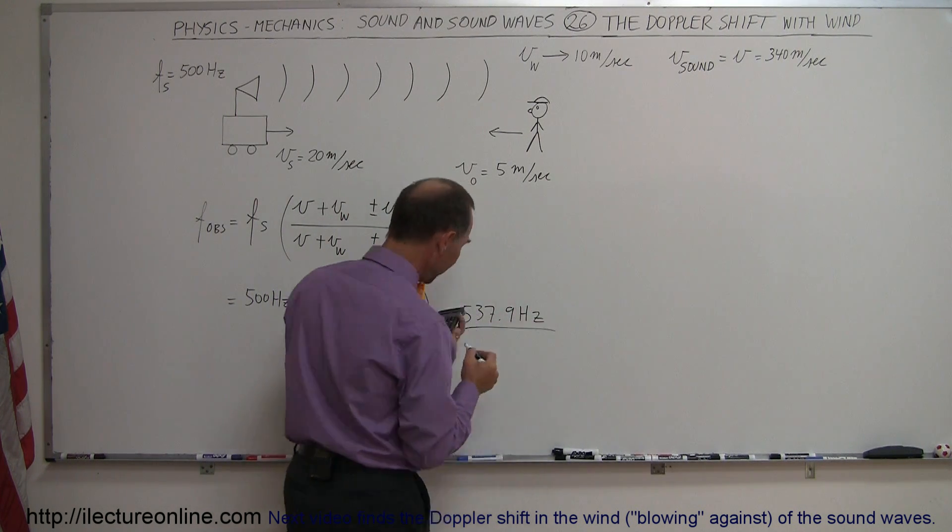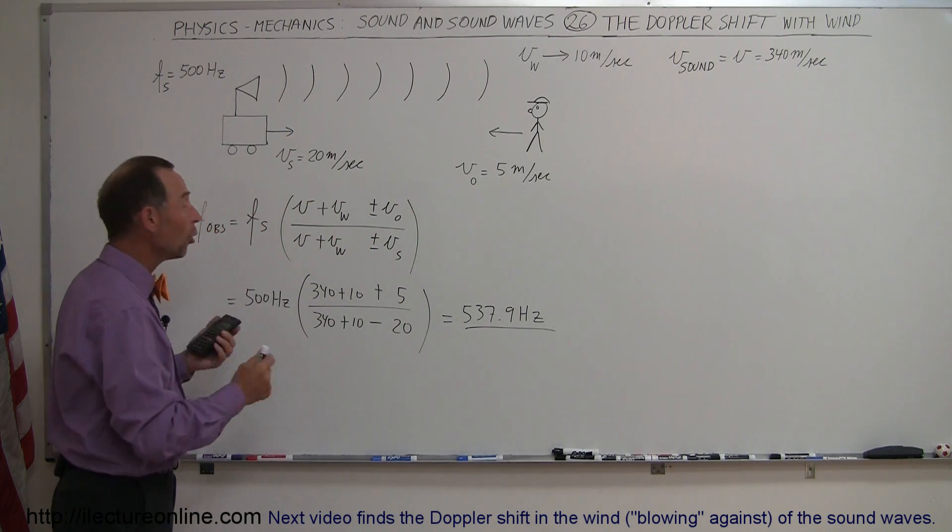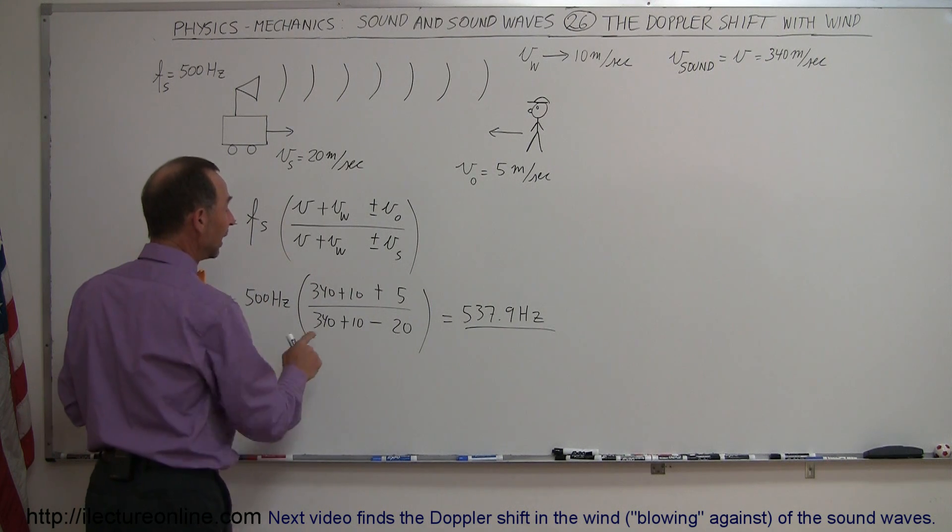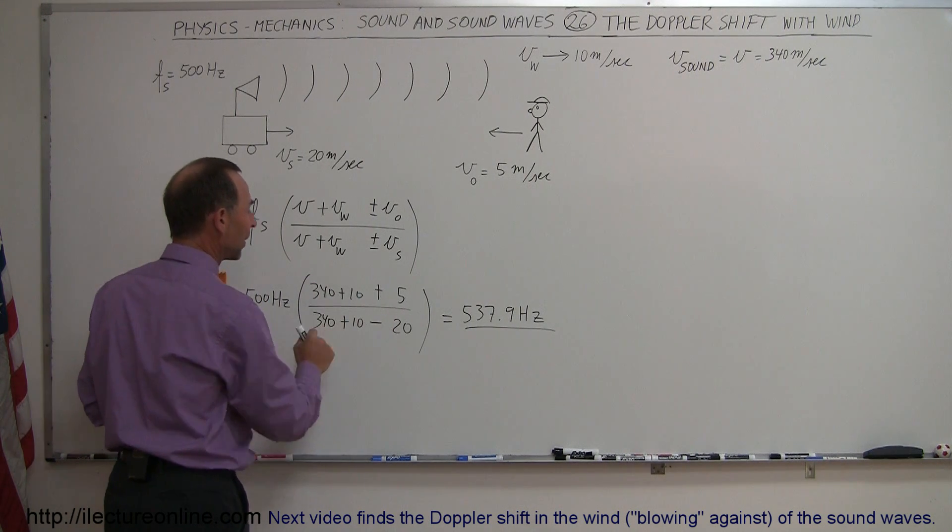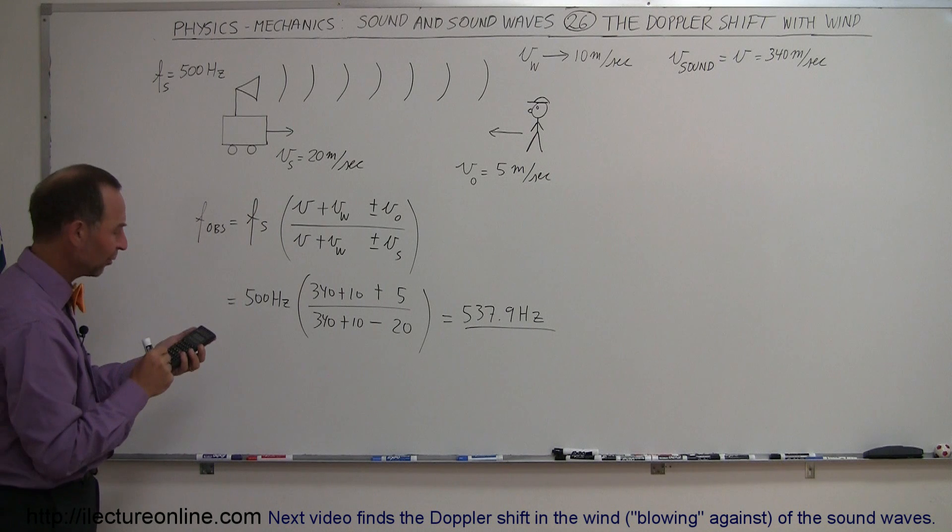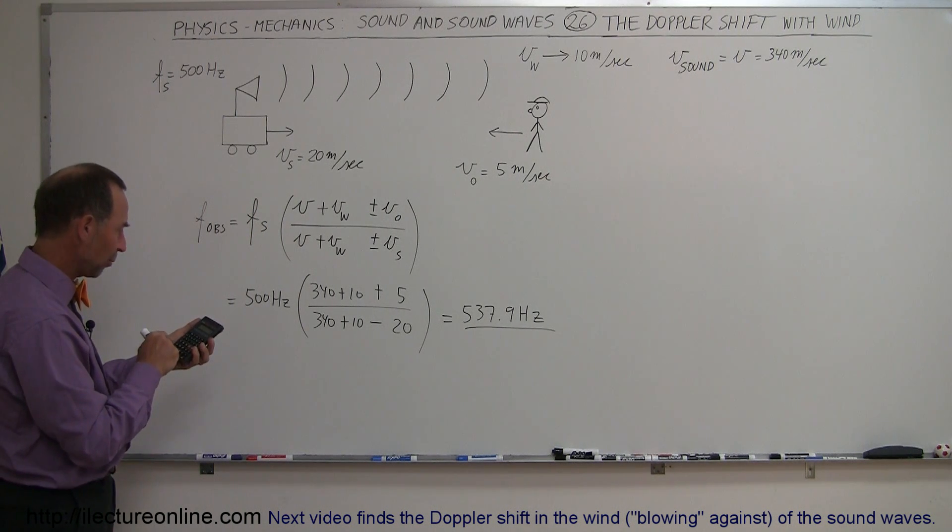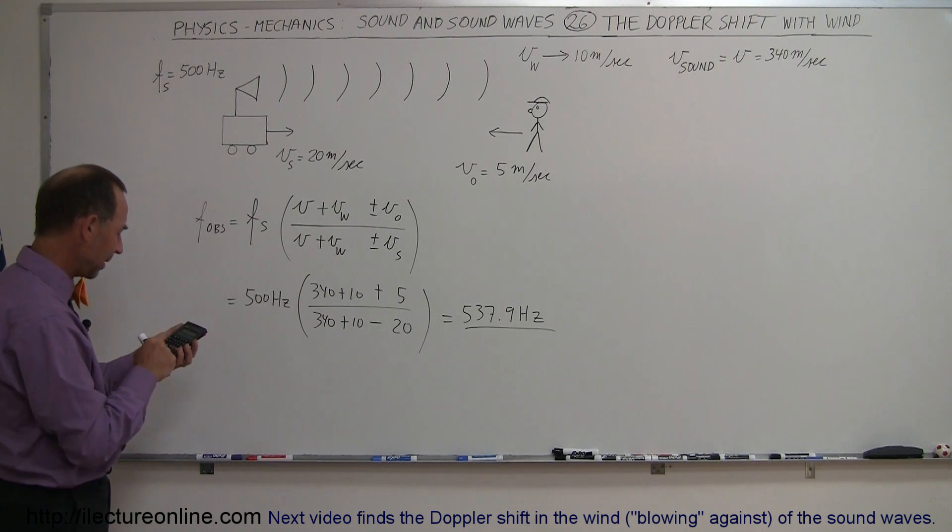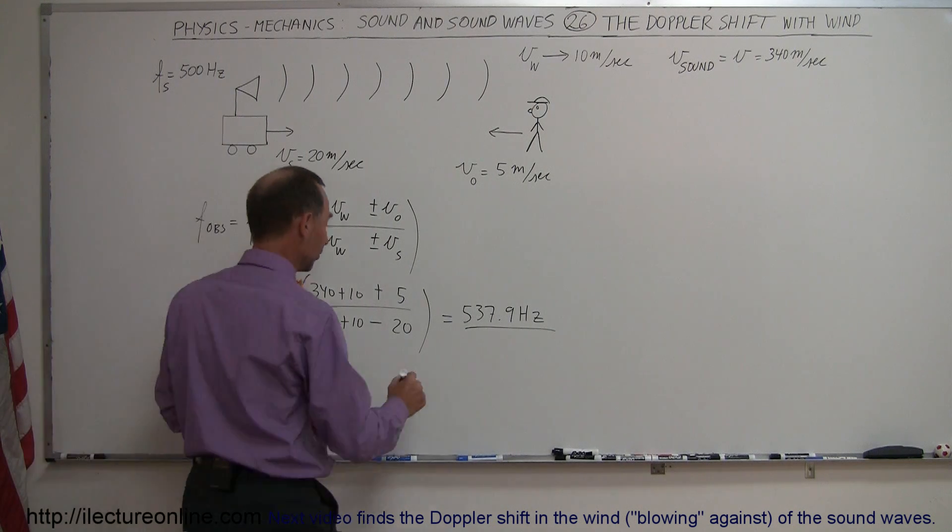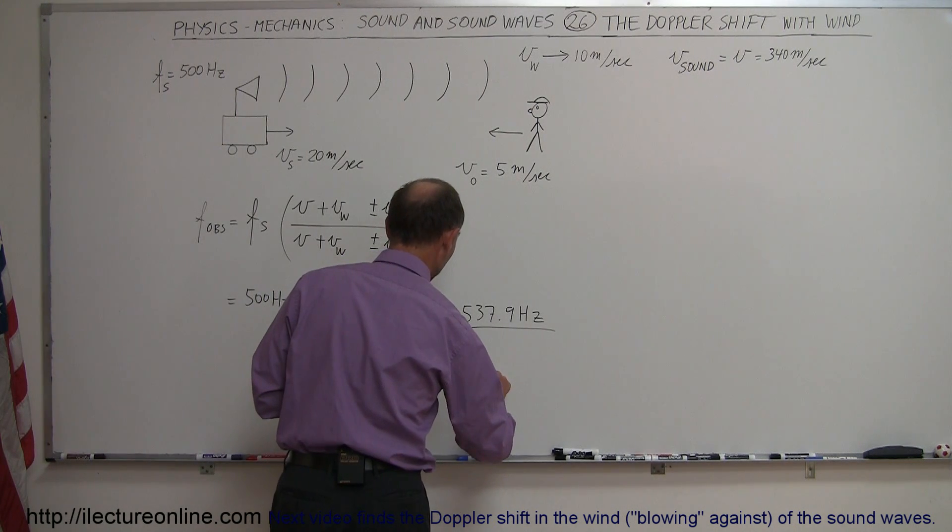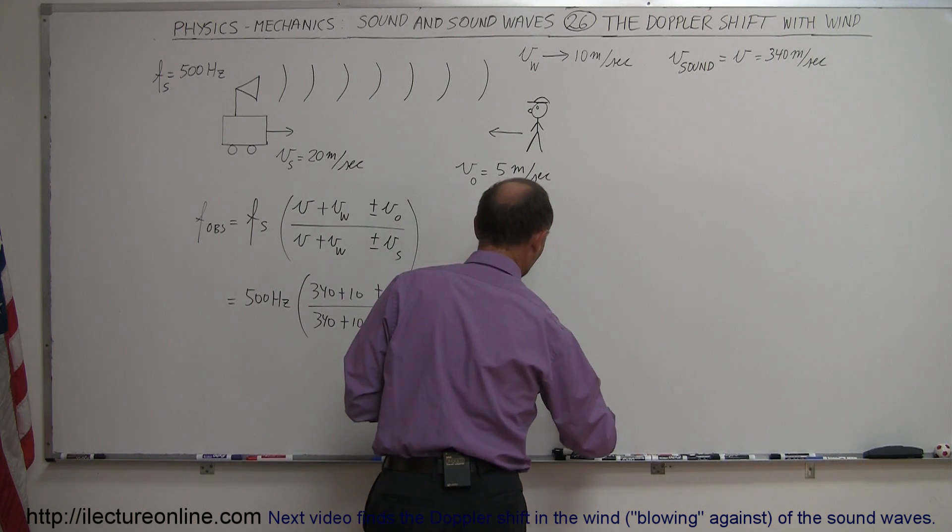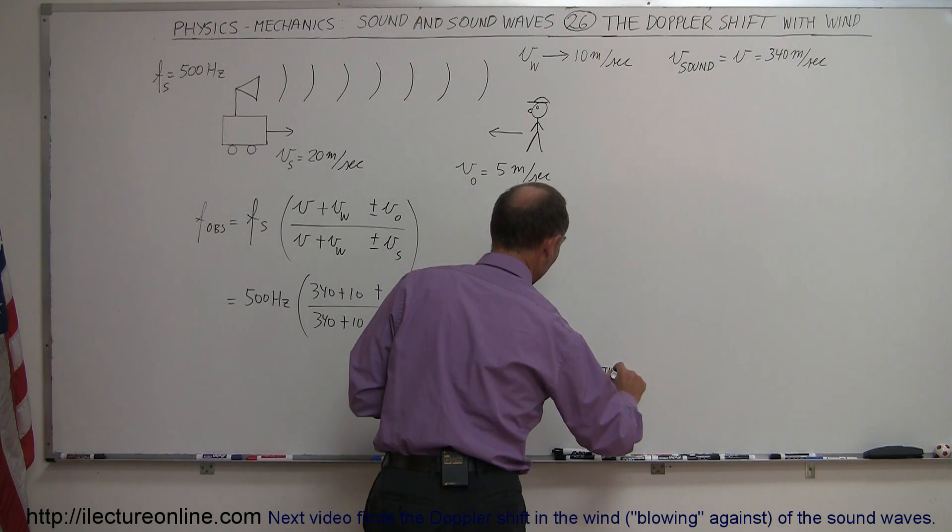Now, to compare that, what would it be if there was no wind? If it was wind still, well, then the tens would go away, they would become zero, and then we would have 345 divided by 320, times the frequency of the source. So, let's try that. That would be 345 divided by 320, and multiply that times 500, and that will give us 539.1. So, otherwise, it would be 539.1 hertz without the wind.